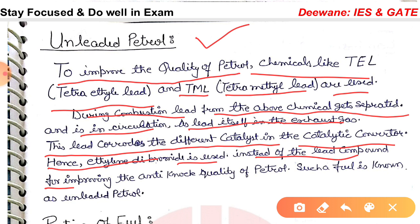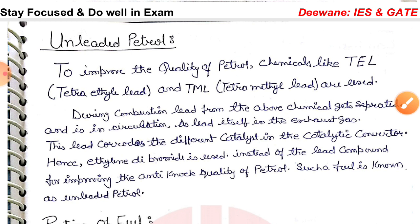To improve the anti-knock quality of petrol, chemicals like TEL (tetraethyl lead) and TML (tetramethyl lead) are used. During combustion, lead from these chemicals gets separated and enters the exhaust gas. Lead corrodes the catalytic converter. Hence ethyl dibromide is used instead of lead compounds for improving the anti-knock quality. Such a fuel is known as unleaded petrol.